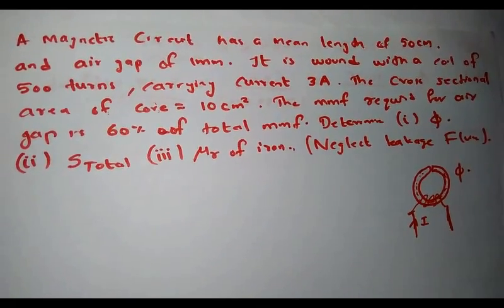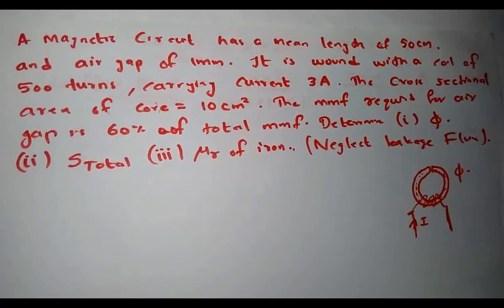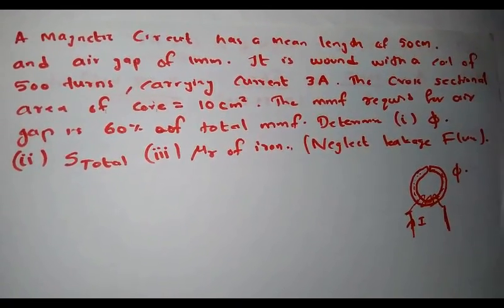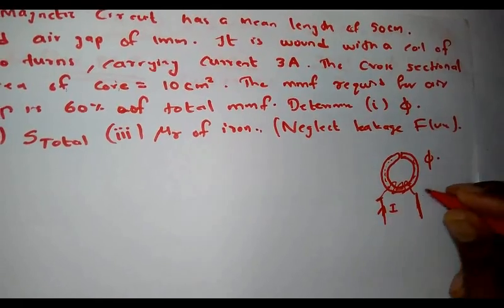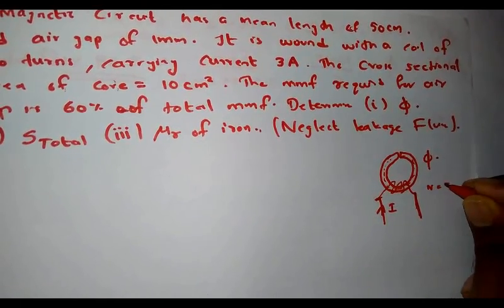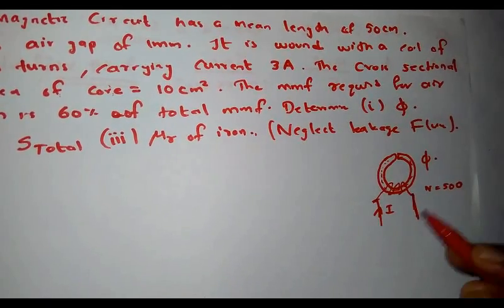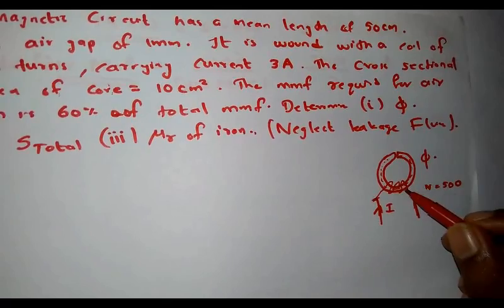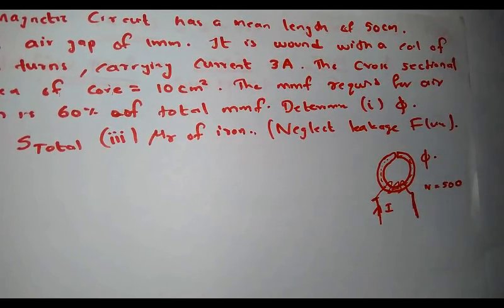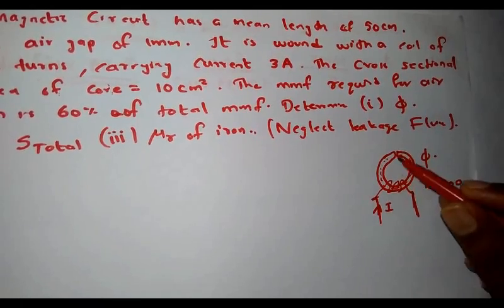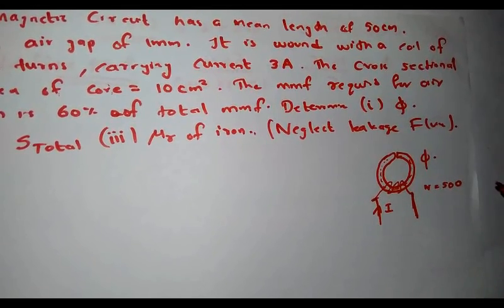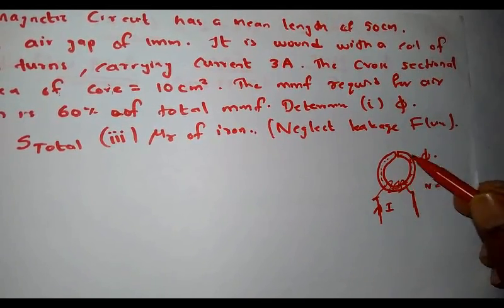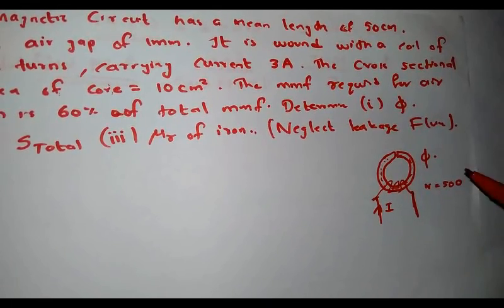In this circuit, other than the magnetic core, there is also a small air gap present. This is a representation of the magnetic circuit, which consists of coils. The number of turns wound on the coil is 500, and a current I of 3 amperes is flowing through the coil. As a result, a magnetic flux phi will be set up across the circuit. This is an example of a series magnetic circuit consisting of two media: the iron part (the circular ring) and the air gap.